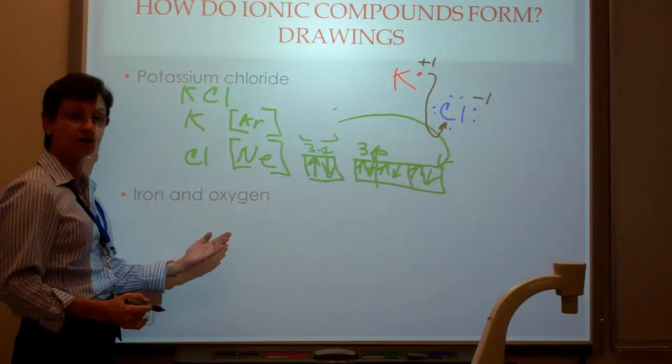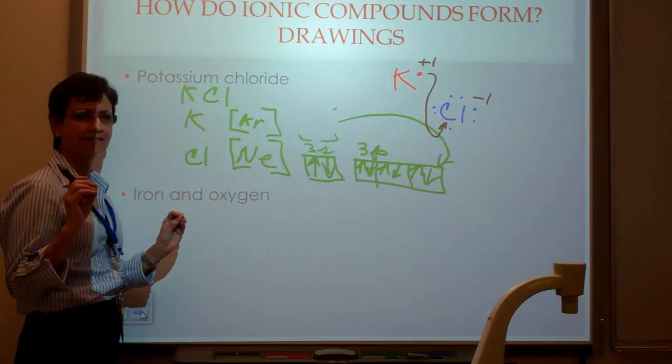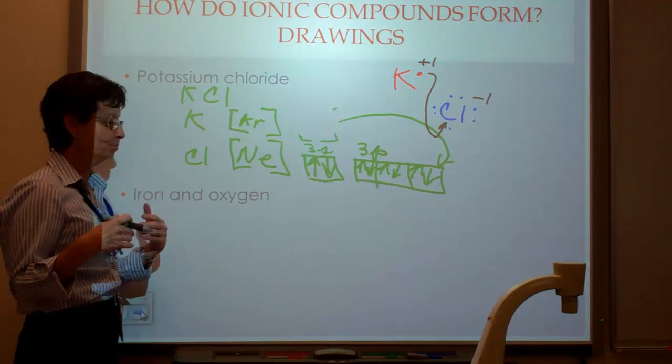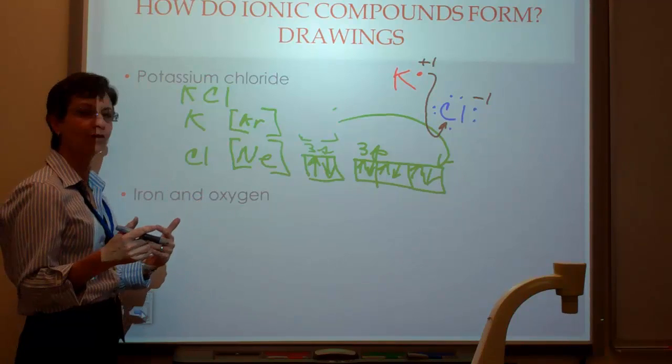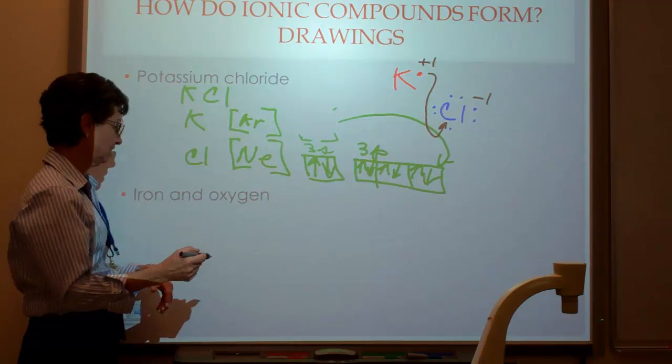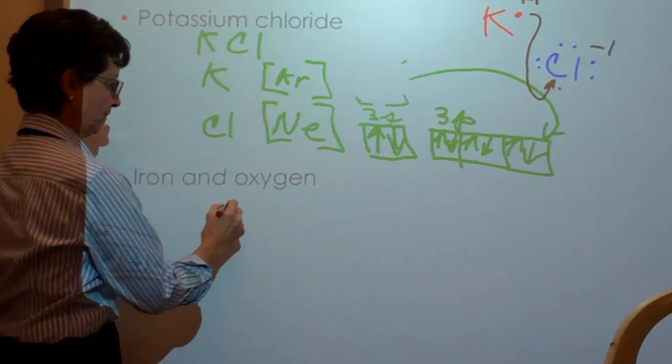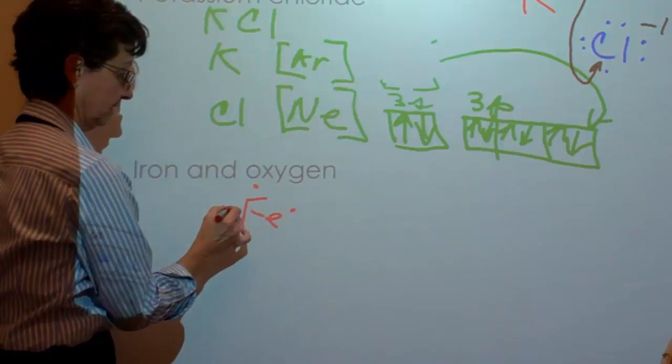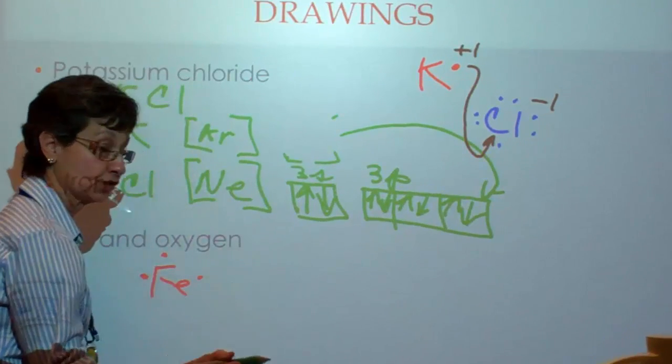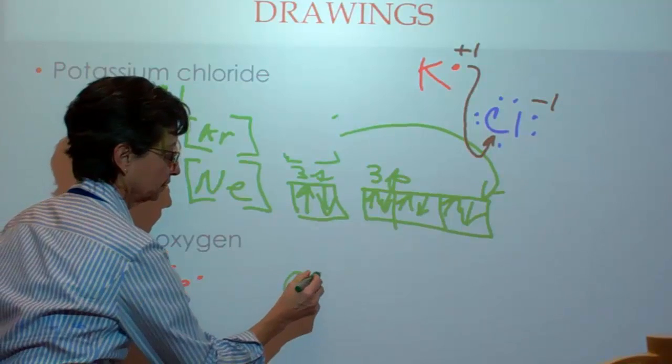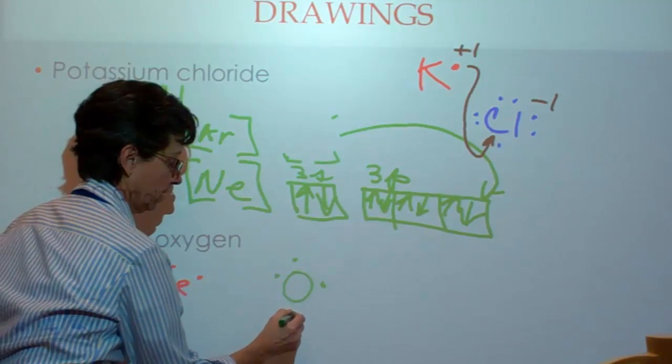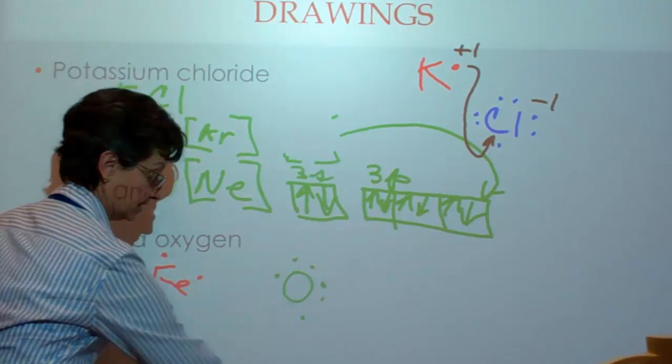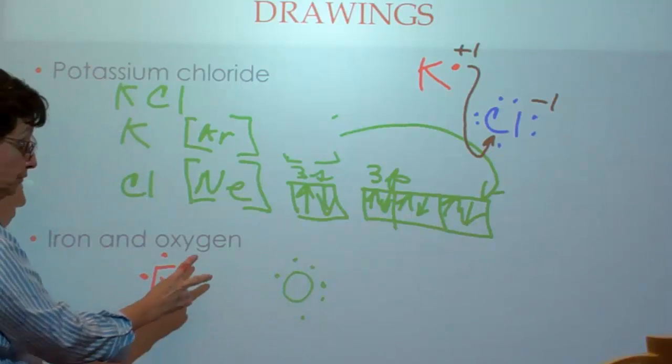Now, I have iron and oxygen. I'm not going to tell you how I get the valence electrons of iron. But, just accept it for now, because it's a transition metal. But, we're going to go ahead and do Fe, and I'm going to tell you that this has 3 valence electrons. And then, oxygen has 6 valence electrons. 1, 2, 3, 4, 5, 6. And, it has 2 places for 2 electrons.